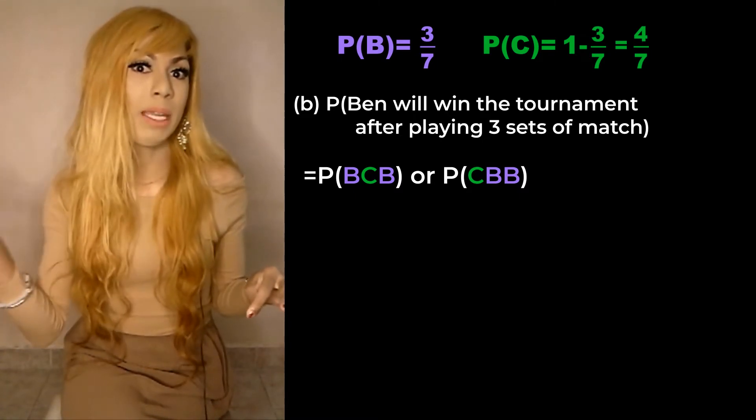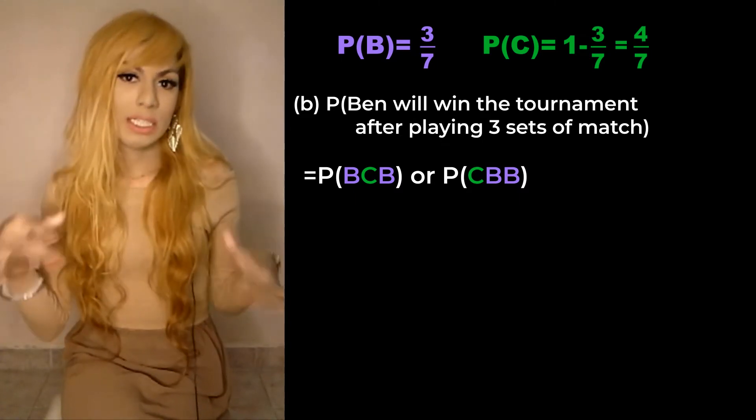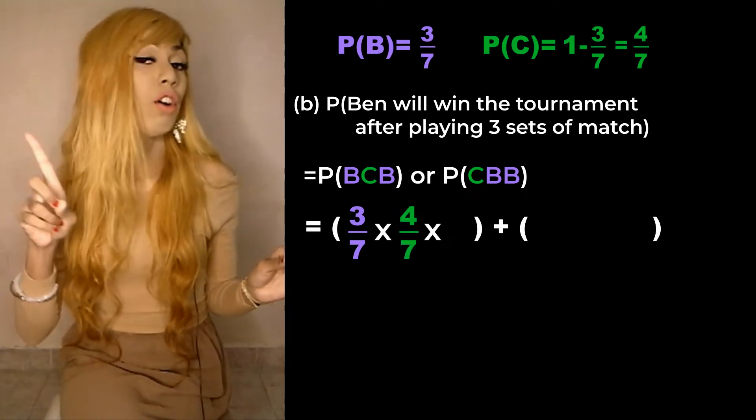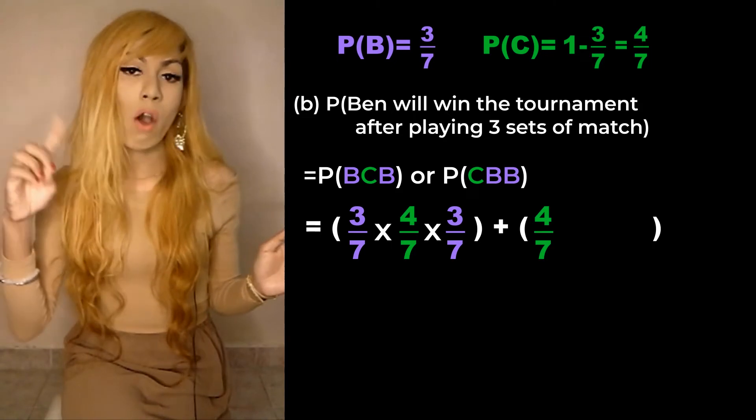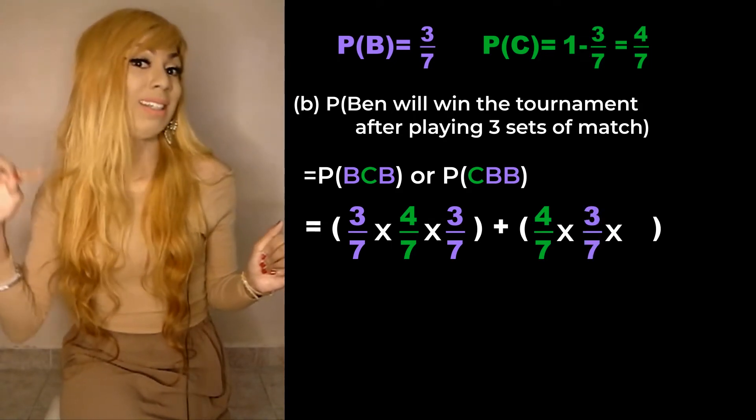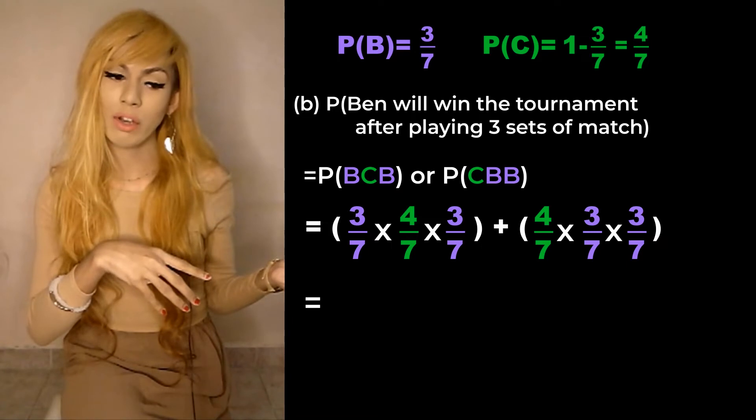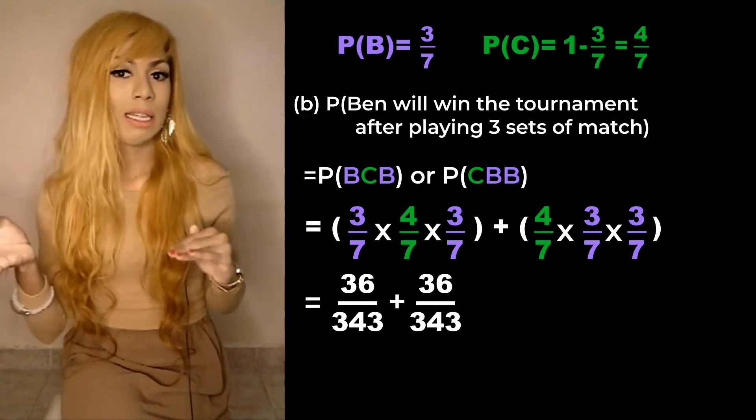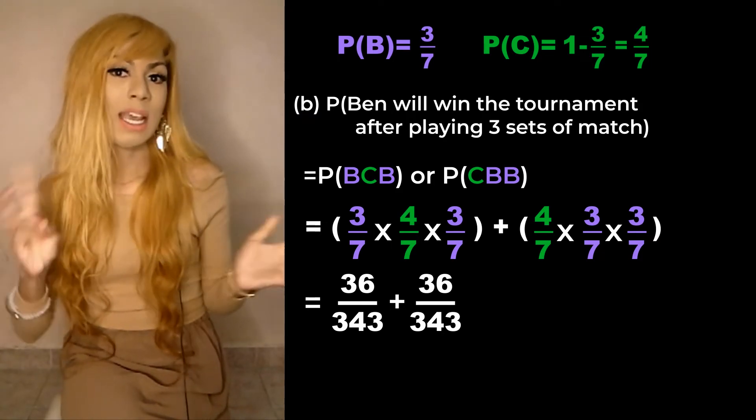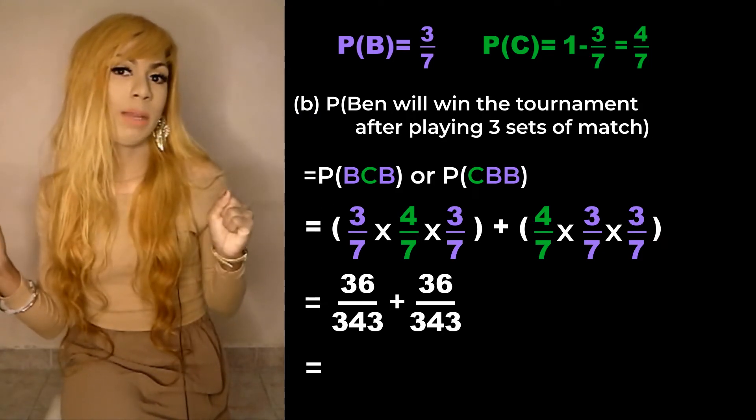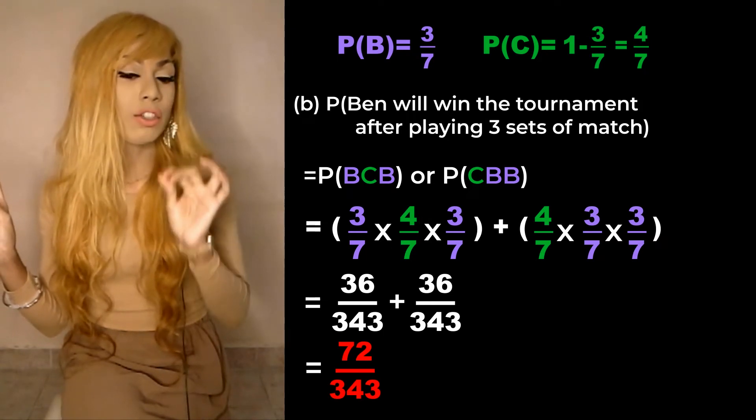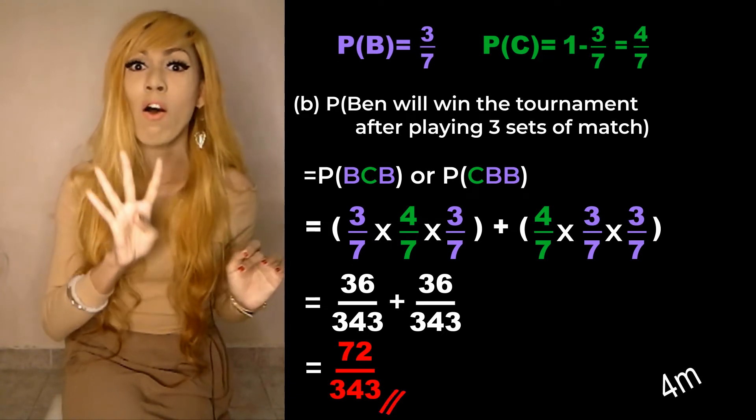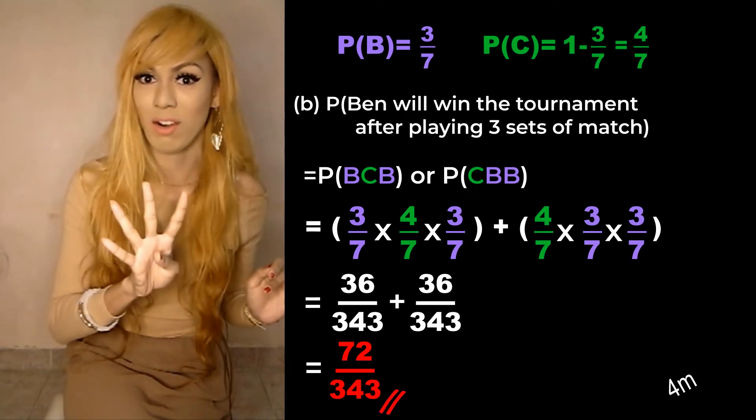Which is equivalent to 3 over 7 times 4 over 7 times 3 over 7 plus 4 over 7 times 3 over 7 times 3 over 7. So the first part we're gonna have 36 over 343 plus same again 36 over 343, and the final answer would be 72 over 343. Okay, so that is for the four marks question.